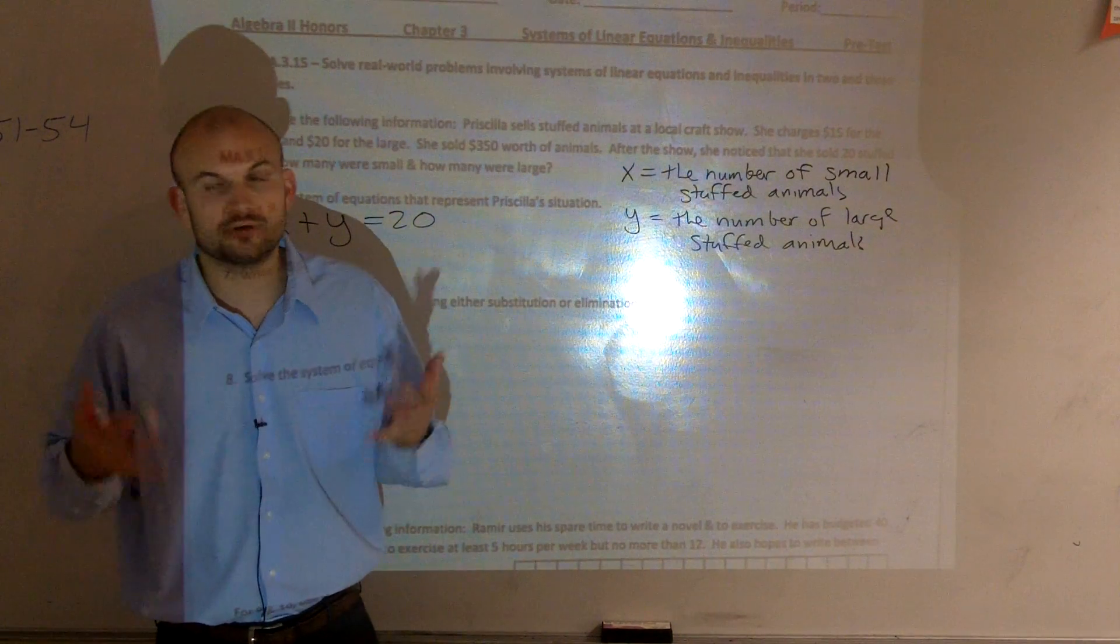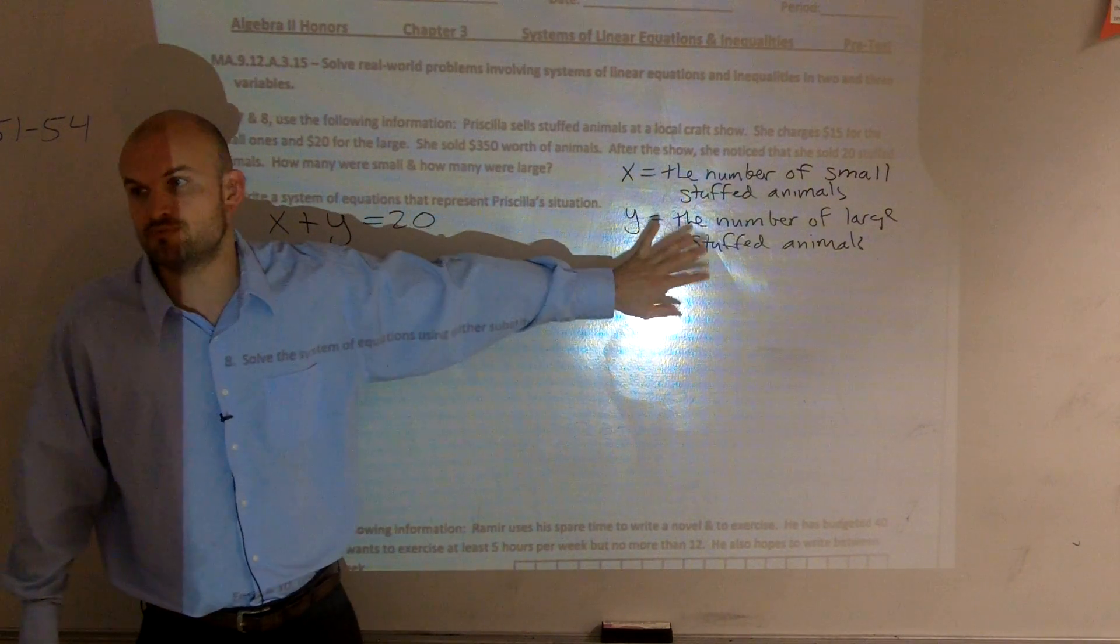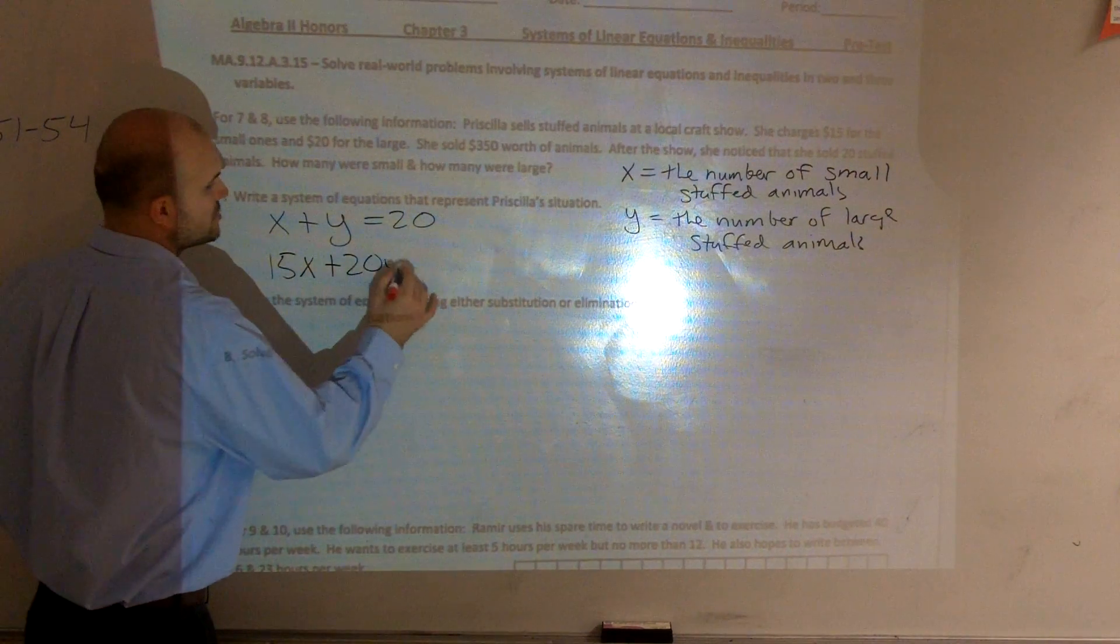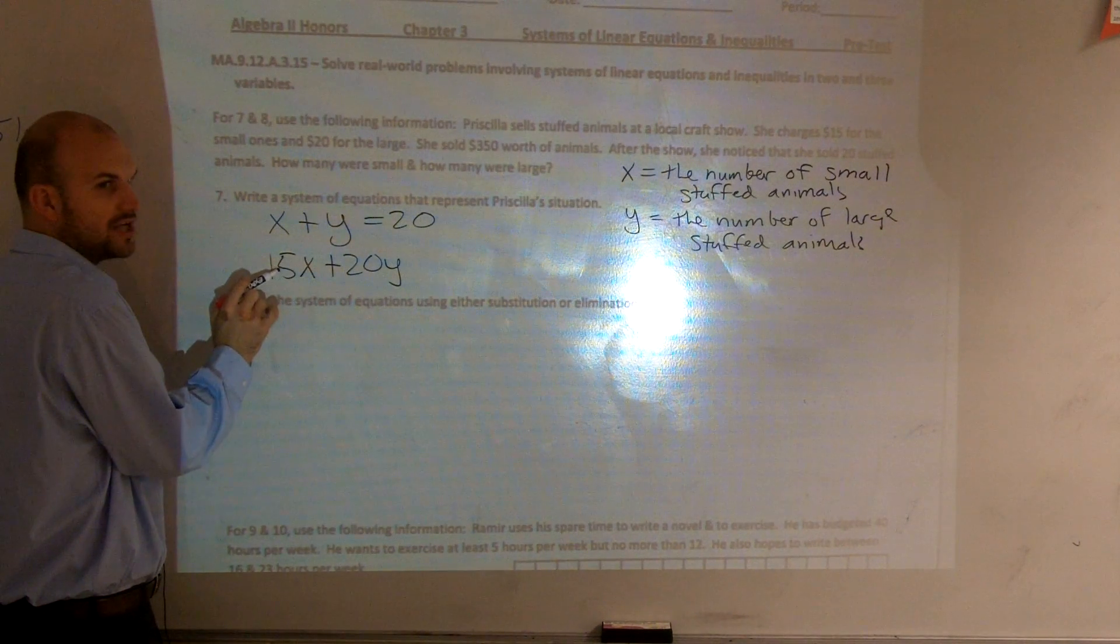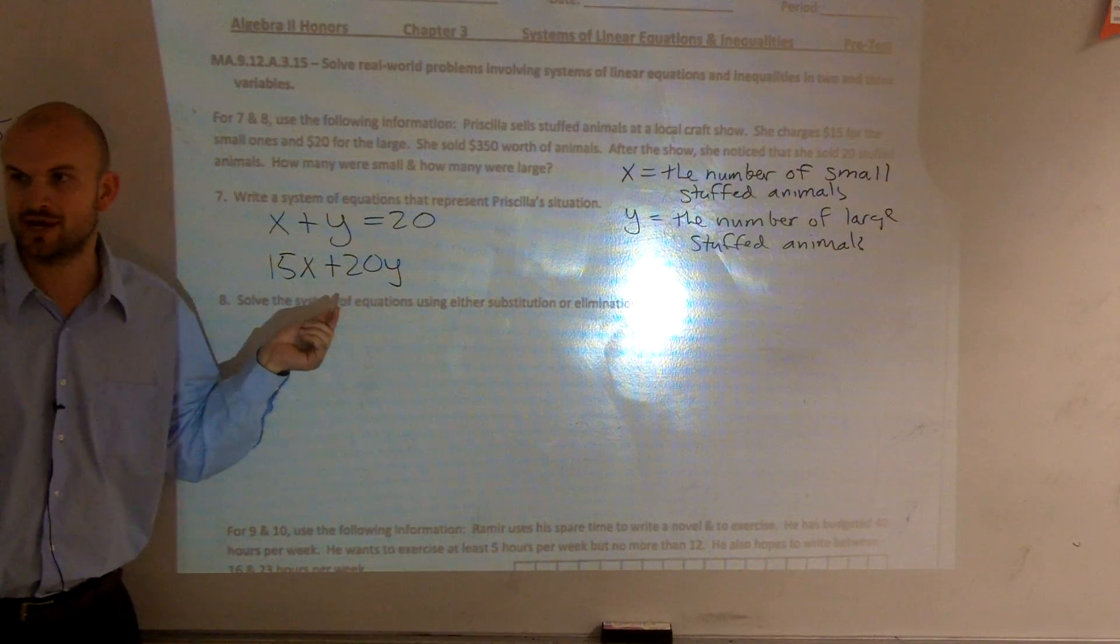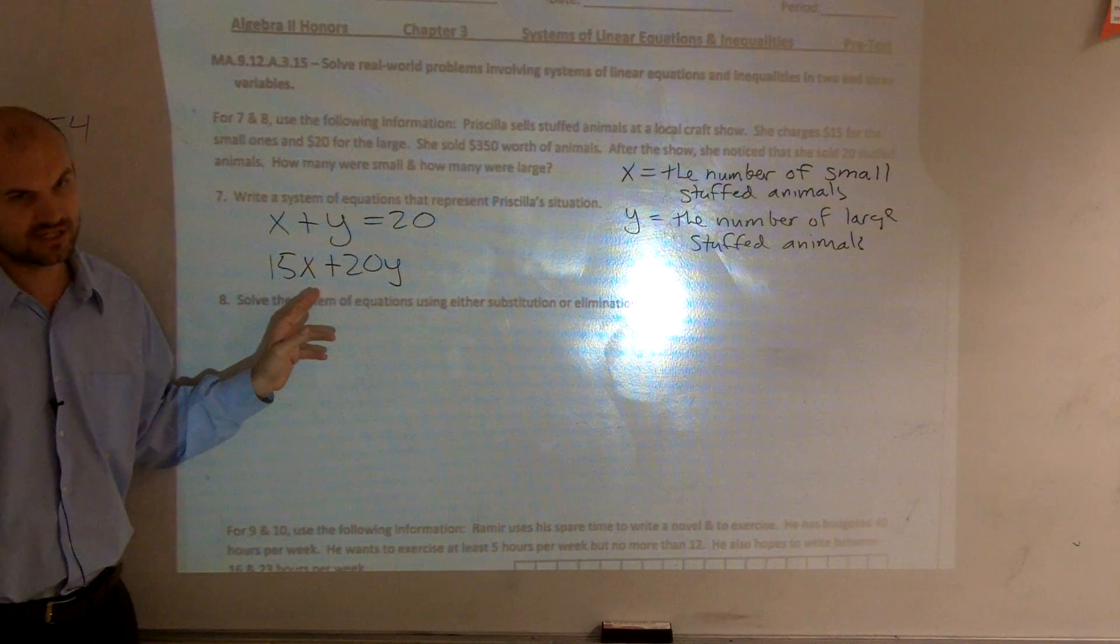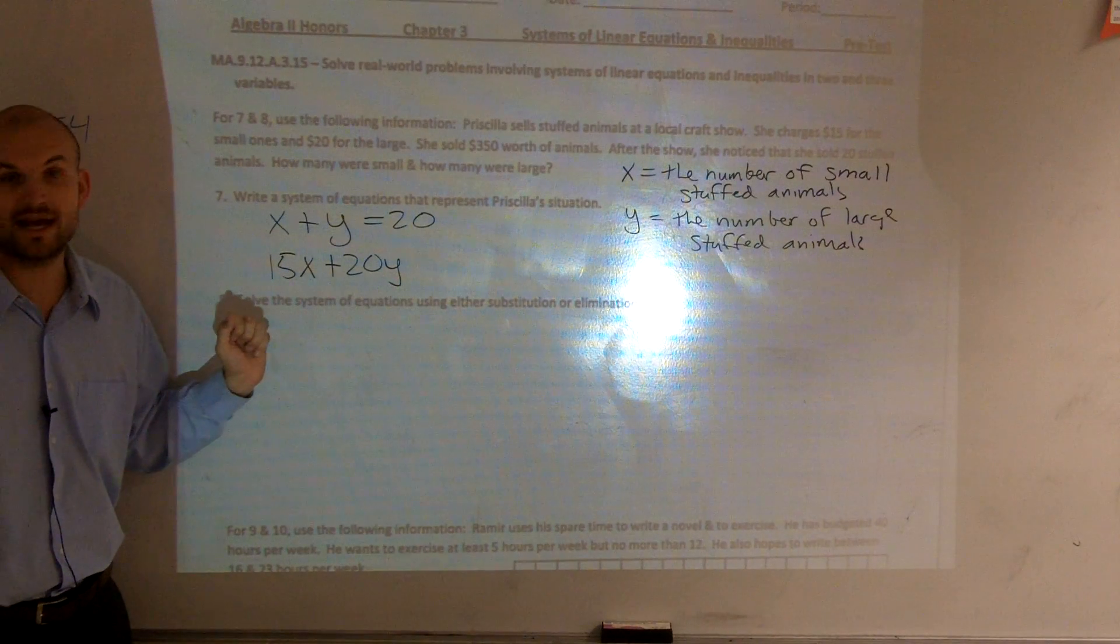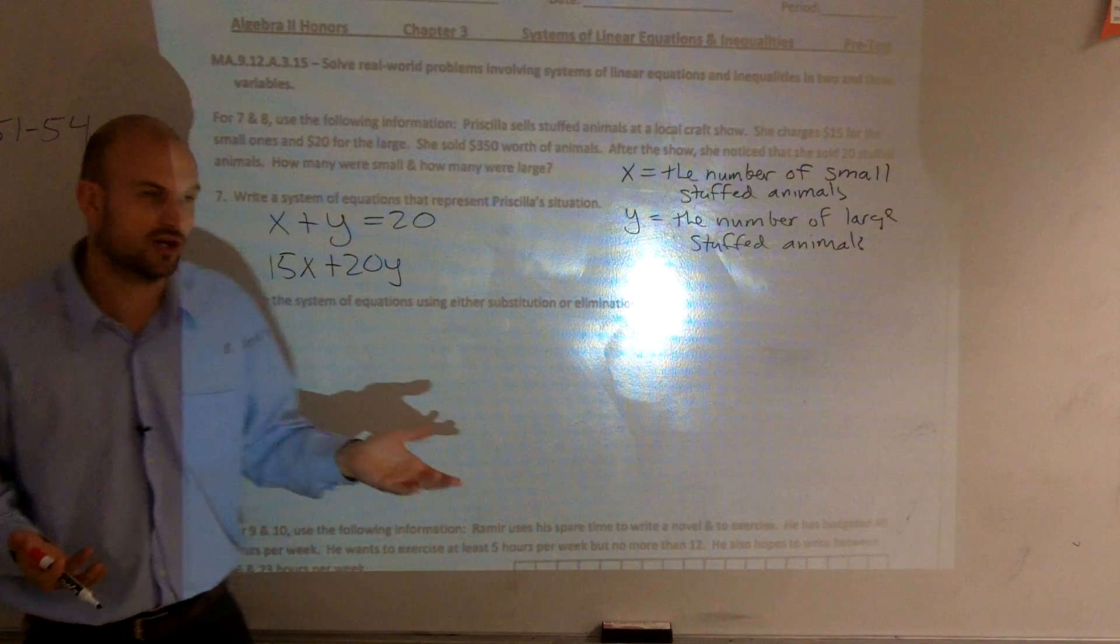So, you're multiplying the number that you sell times how much you charge for that. You could say 15x plus 20y. For every one of these animals that you sell, you get $15 for it. Repeated addition, we write as our multiplication. Because if you sold one, how much money would you get? $15 for the small animals. If you sell two animals, how much money do you get? 30. It's repeated addition, which we go with multiplication.